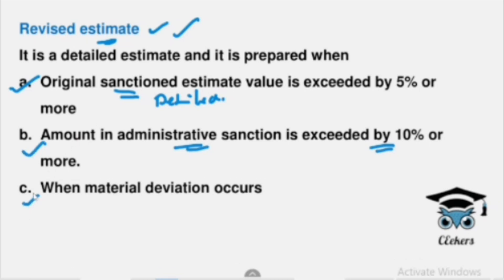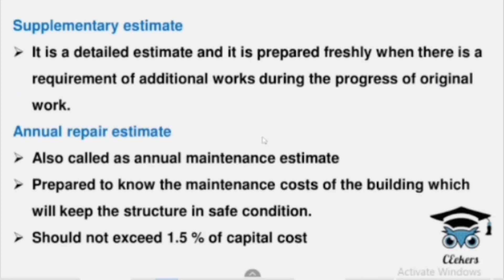The second condition is related to technical sanction — if the technically sanctioned amount is exceeded by 5%, or if material deviation exceeds 10%, we prepare a Revised Estimate. These are important conditions.